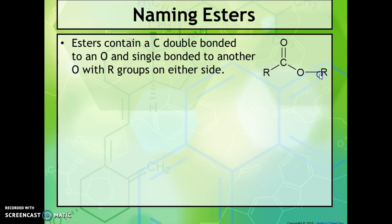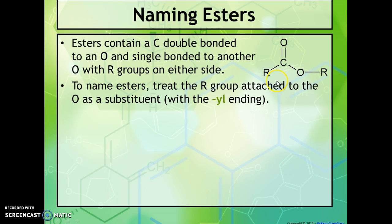To name these, we treat the R group that's attached to our O over here as a substituent and we just change it to 'yl' on the end. And on the parent alkane, we're going to be taking off an E and adding 'oate'.